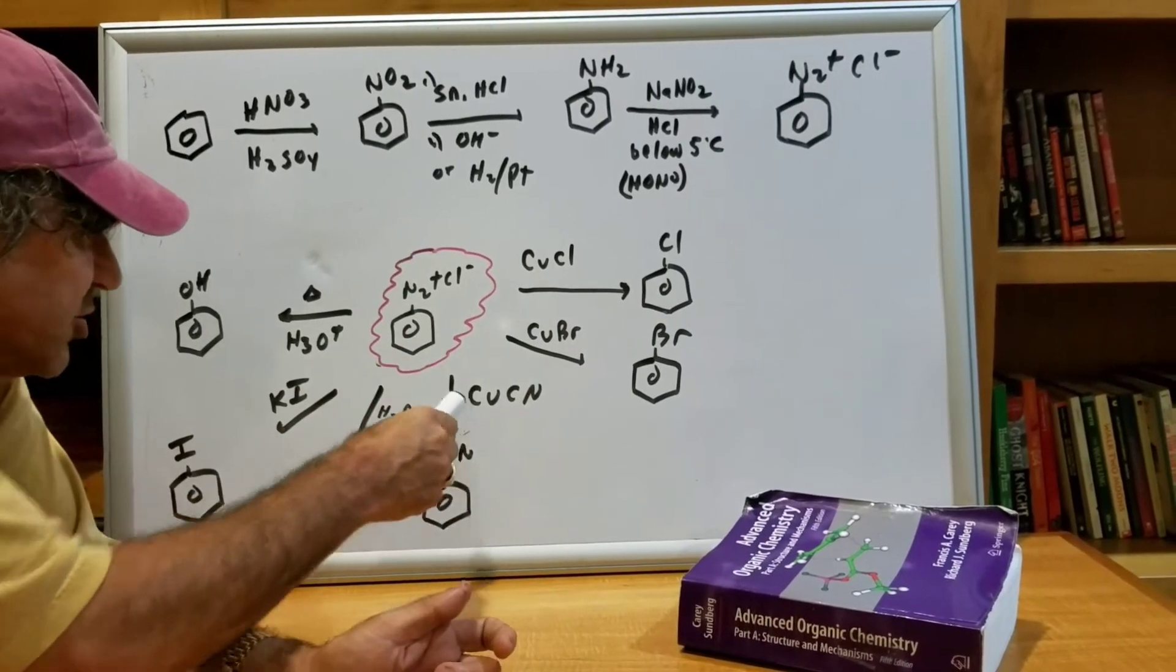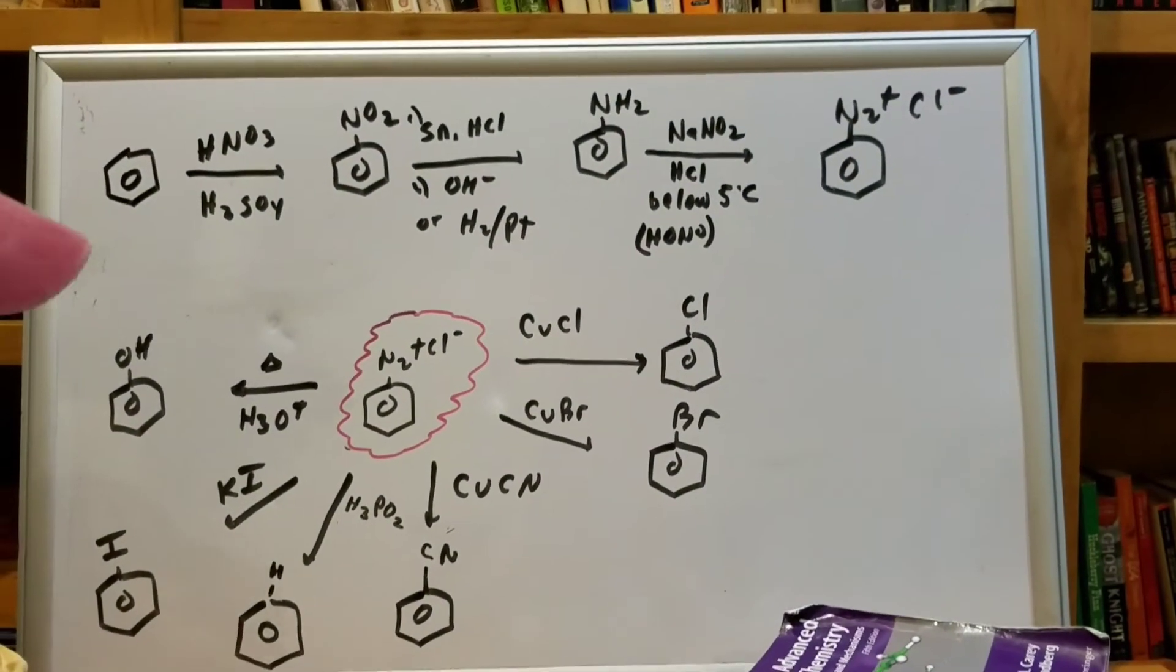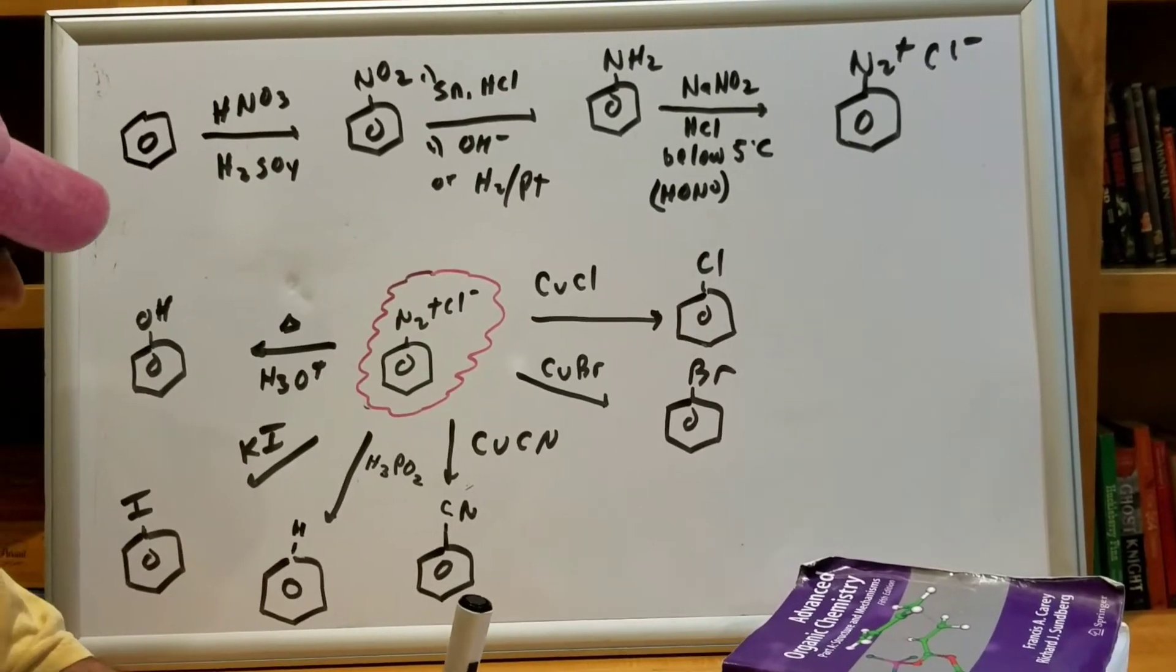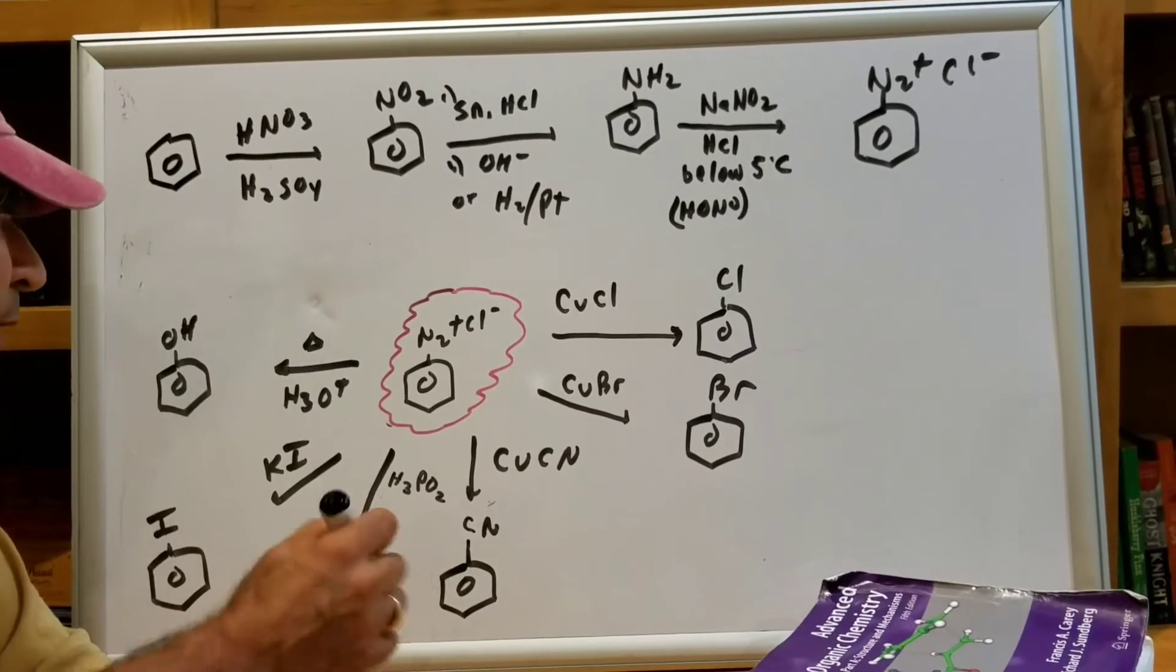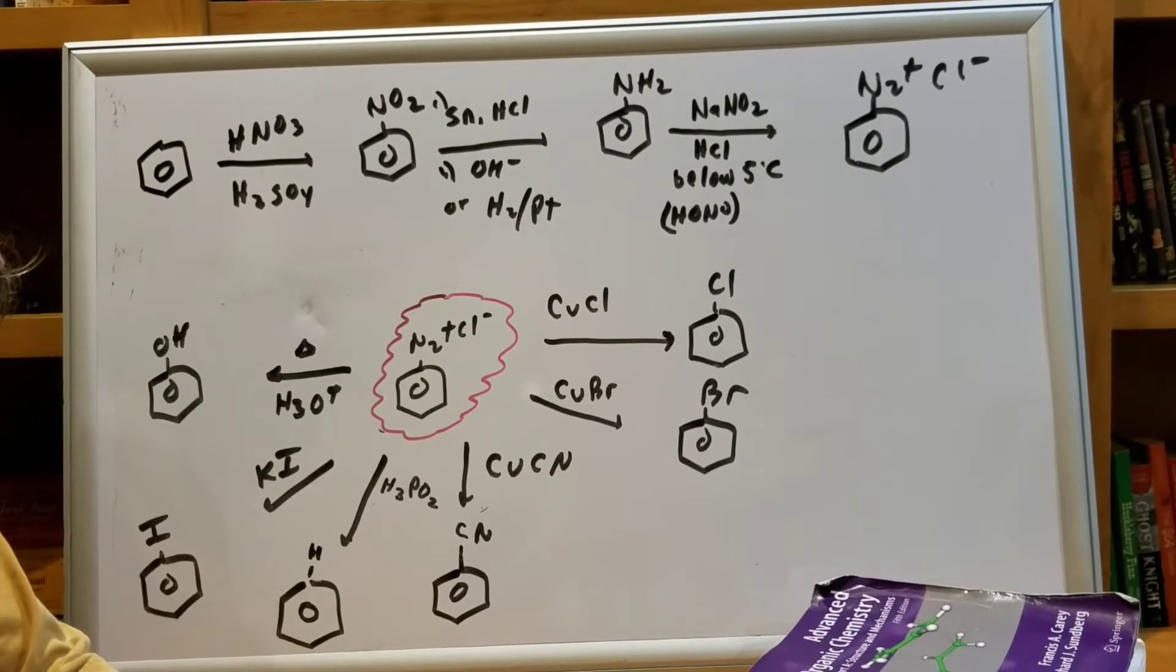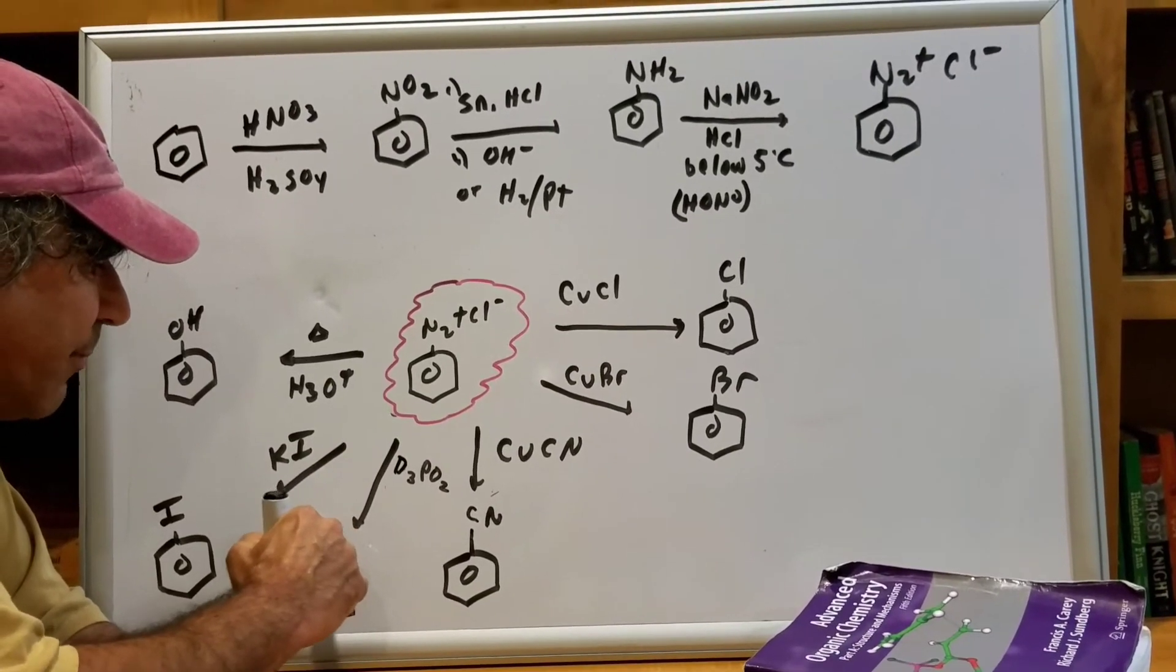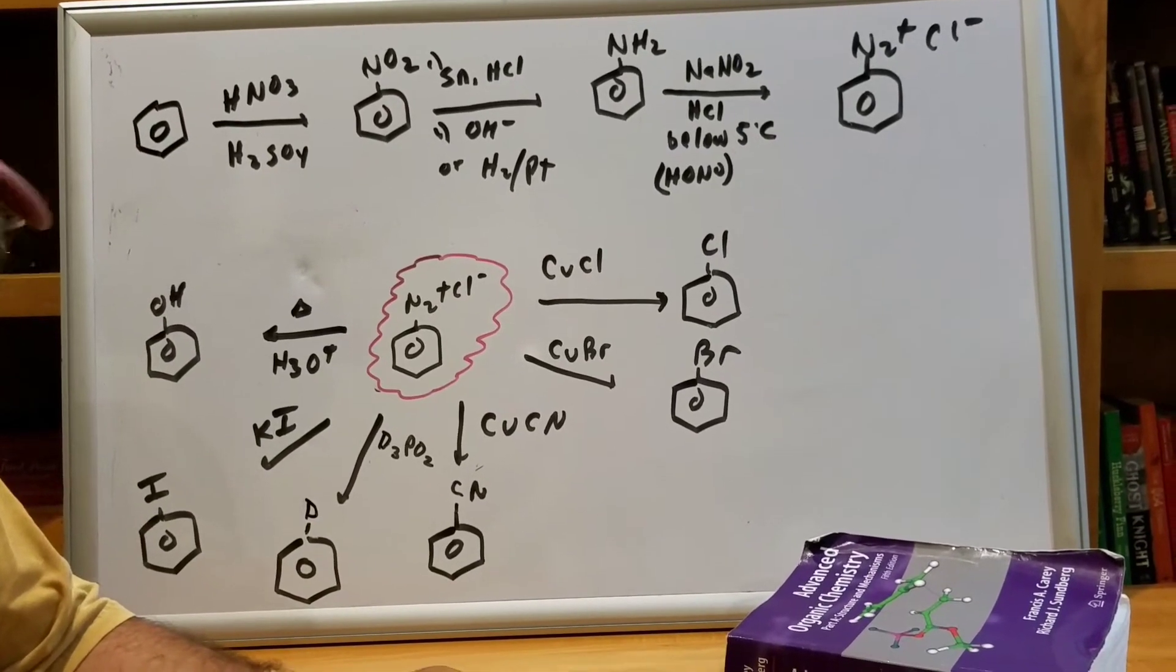We could also react it with CuCN. Again, that's one of my favorite ways to put on a CN group, a nitrile, onto a benzene ring. Here's a hard one. Most kids have no clue on what this is. This is called hypophosphorus acid, H3PO2. And what it does, it replaces the N2Cl minus group with an H. Now, if you replace the H with a D, you would deuterate the molecule. And that's a wonderful way how to deuterate a benzene ring.